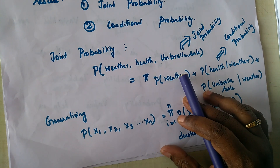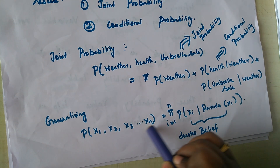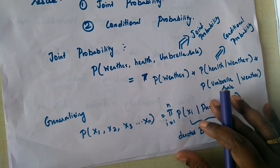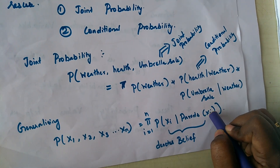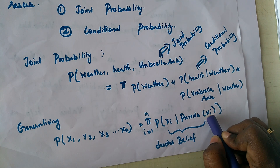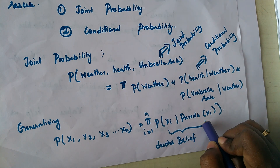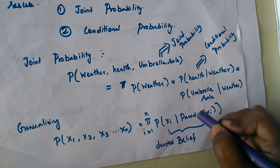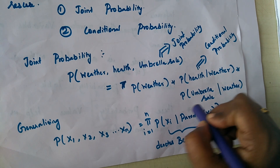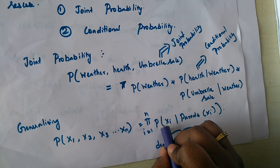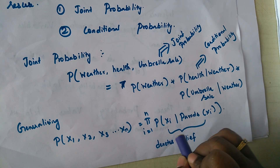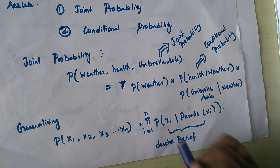Generalizing, the probability of all random variables is given by the product of their conditional probabilities given their parents' probability. This denotes the belief — we believe in a certain probability which allows us to predict or reason out the probability of another random variable. Hence the name Bayesian belief network.